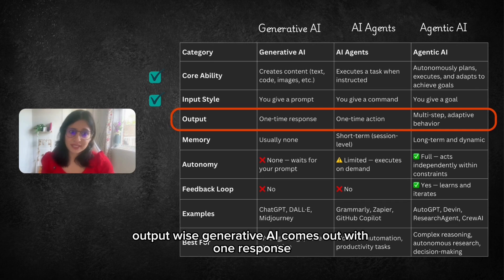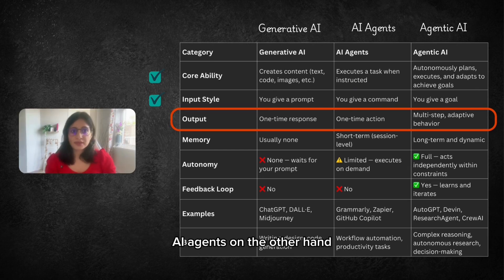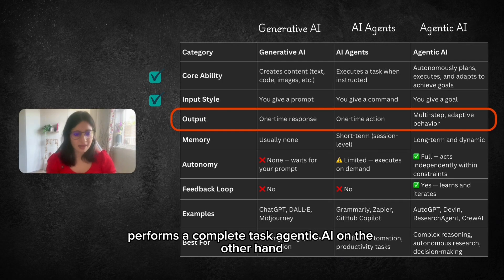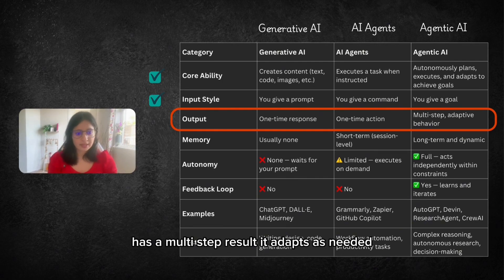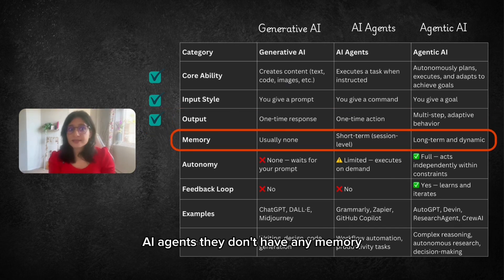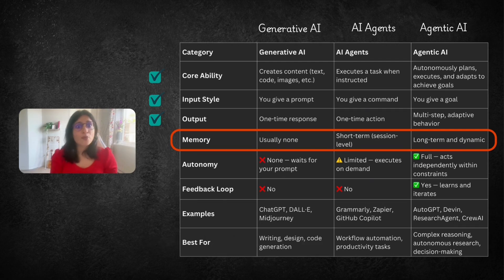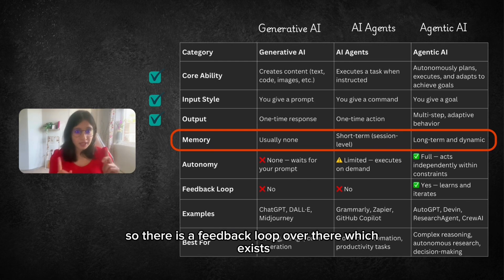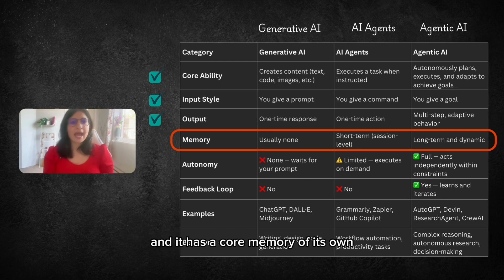Output wise, Generative AI comes out with one response. AI Agents on the other hand performs a complete task. Agentic AI on the other hand has a multi-step result. It adapts as needed. Memory wise, Generative AI doesn't have any memory. AI Agents they don't have any memory. Whereas Agentic AI has long-term memory, it learns from its past. So there is a feedback loop over there which exists and it has a core memory of its own.